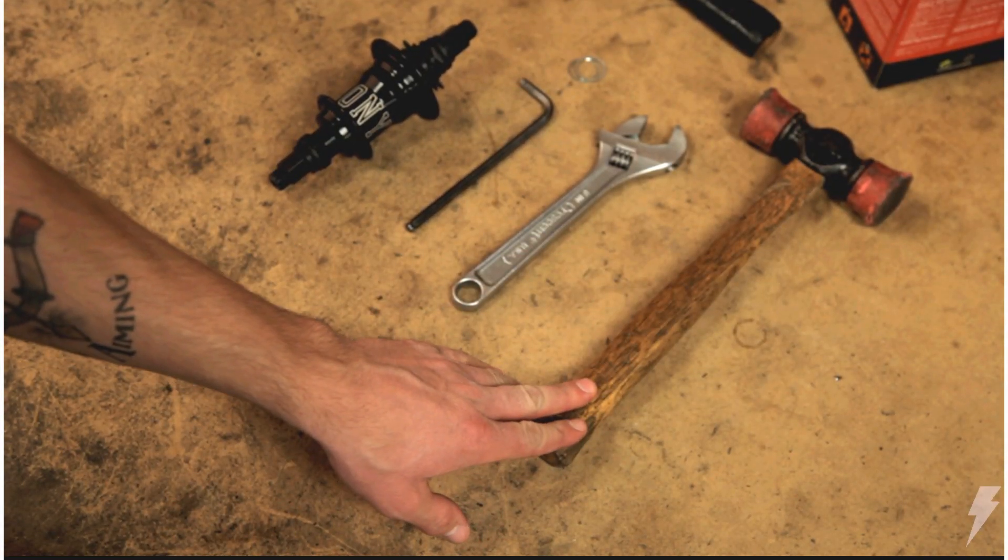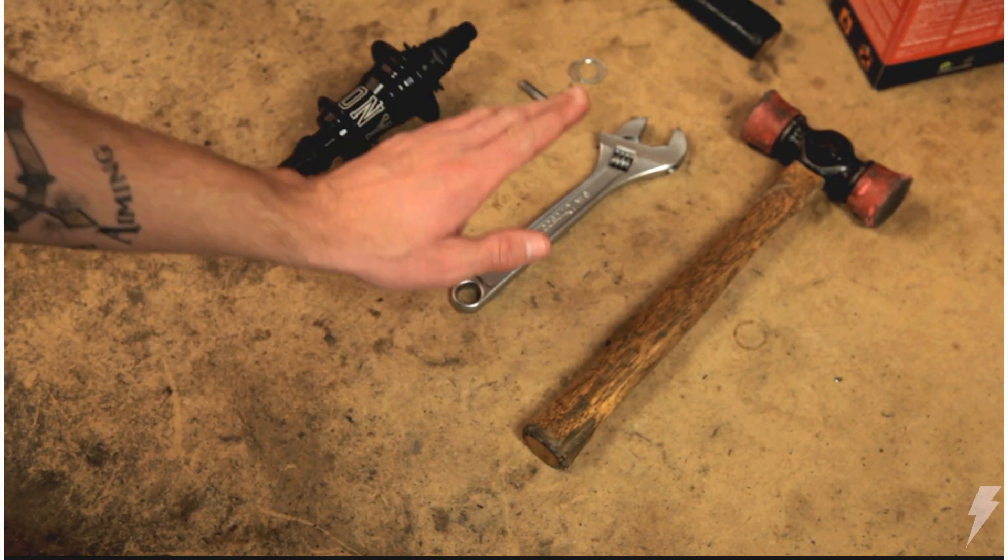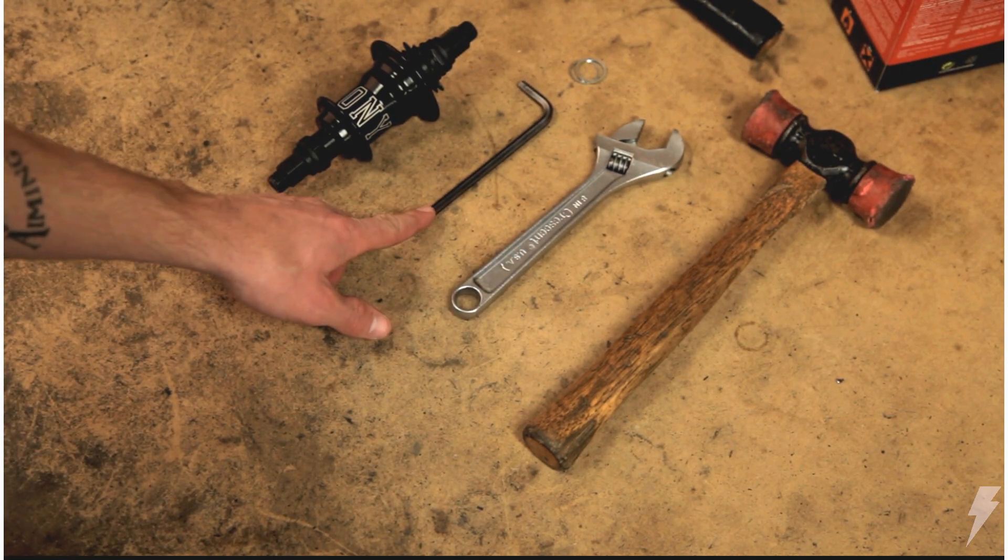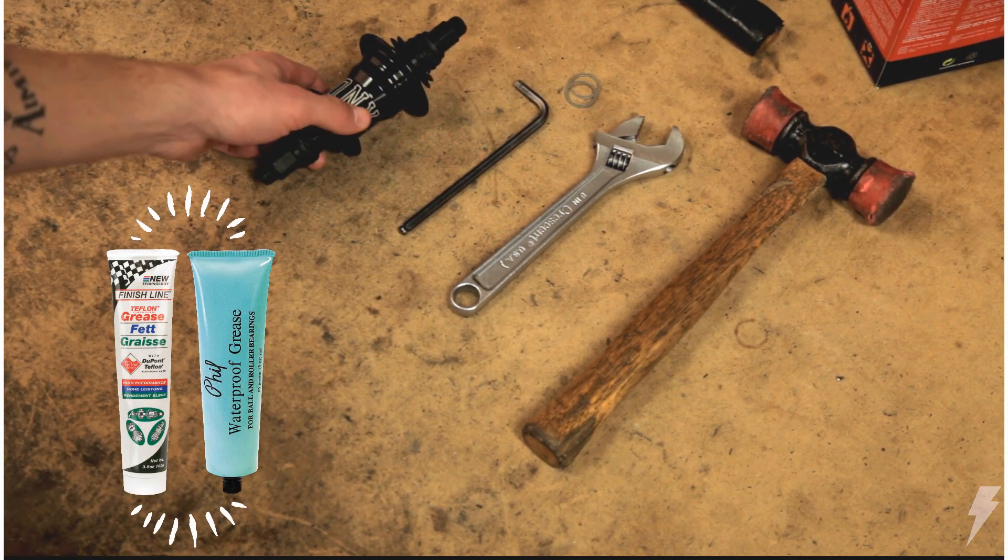Tools needed are a rubber mallet or some type of hammer, an adjustable wrench, six millimeter allen wrench, and some type of grease. We recommend finish line or fill wood.